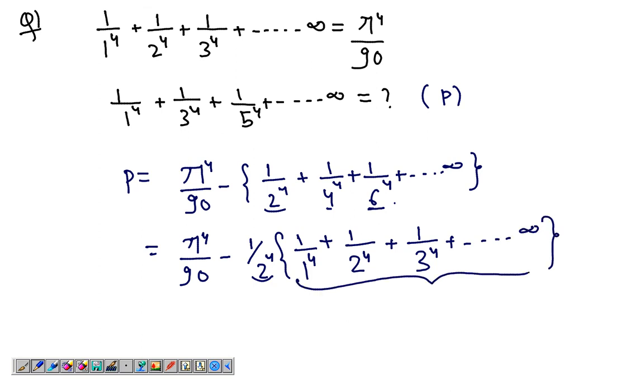Which has a value of π^4 over 90. So I might just rewrite this as π^4 over 90 take away 1 over 2^4, and again π^4 over 90, which just comes out common.